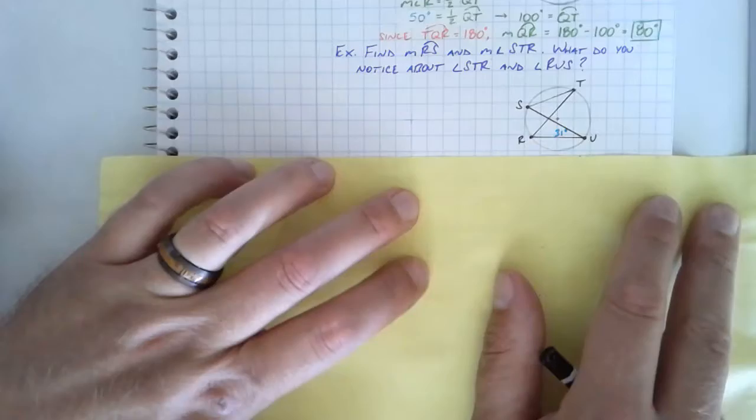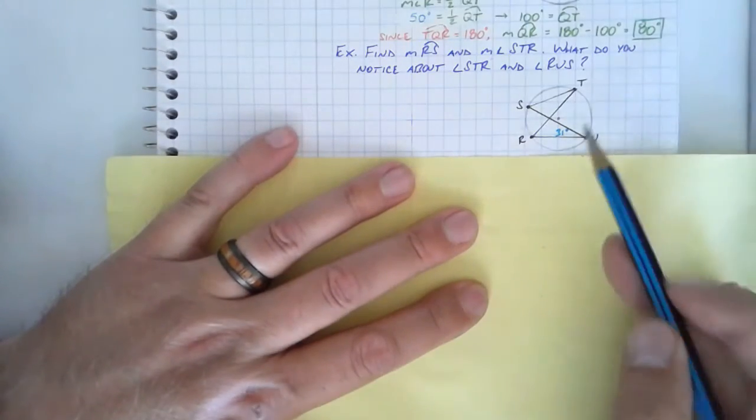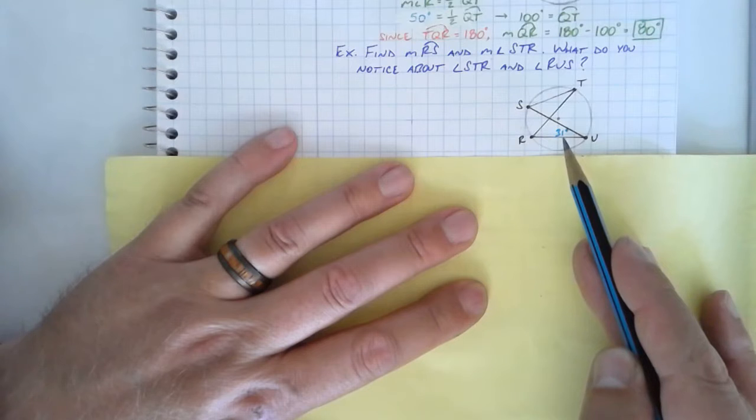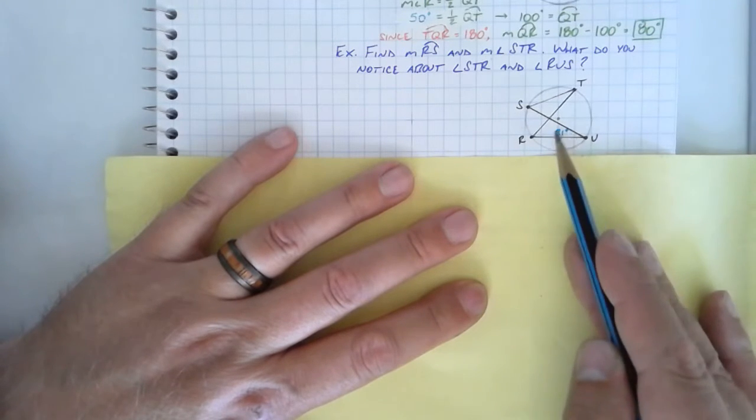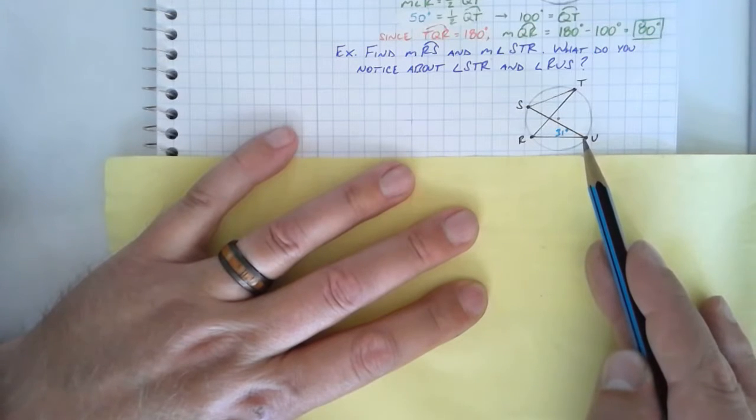So we're given the following diagram. And in this mess of a diagram, there's actually only one measurement shown here. 31 degrees. It's inside this wedge of angle U. So 31 degrees refers to the measurement of angle U.